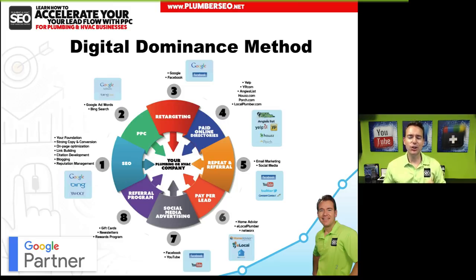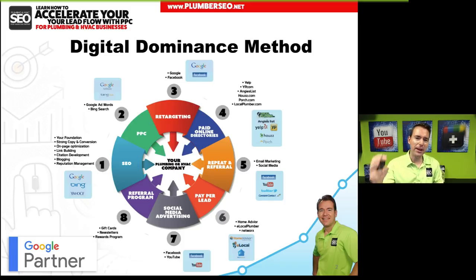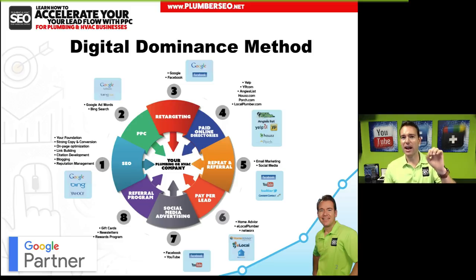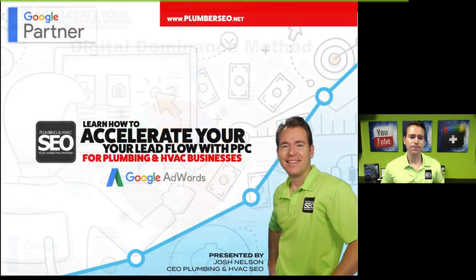This is part of our Digital Dominance Method — all about how to maximize your lead flow online and truly dominate your local service area. The method unpacks everything you need to do, from SEO, pay-per-click, retargeting, paid directories, repeat referral strategies, social media, and pay-per-lead services. Over the last couple of months we've been unpacking each one of these, and this month we're going deep on PPC and paid search specifically.